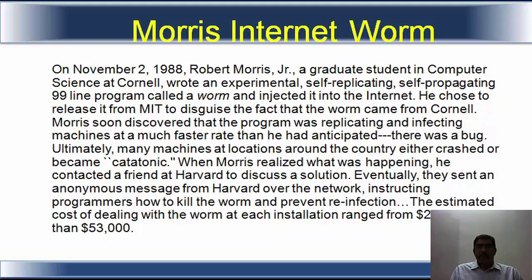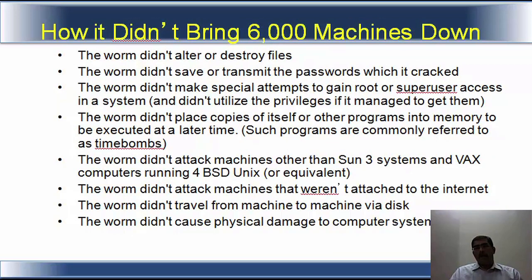Ultimately, many machines at locations around the country either crashed or became catatonic. When Morris realized what was happening, he contacted a friend at Harvard to discuss a solution. Eventually, they sent an anonymous message from Harvard over the network, instructing programs on how to kill the worm and to prevent reinfection. The estimated cost of dealing with the worm at each installation ranged from 200 dollars to more than 53,000 dollars — the damage was quite high.